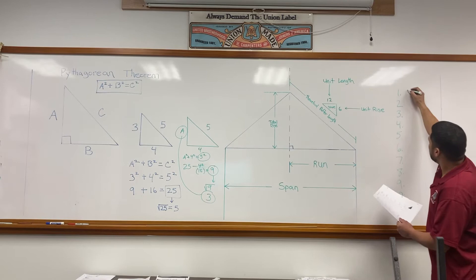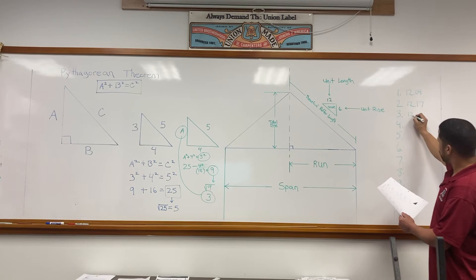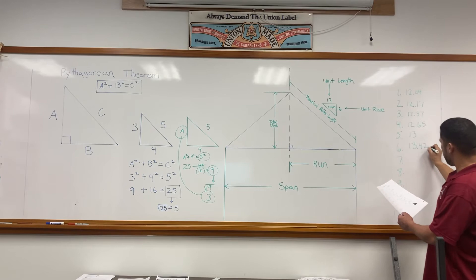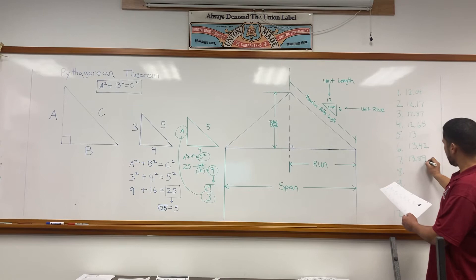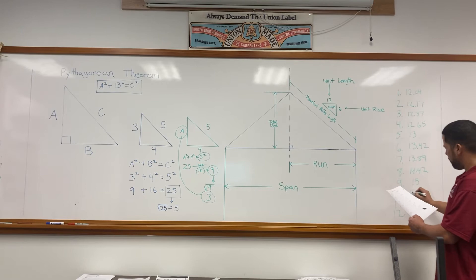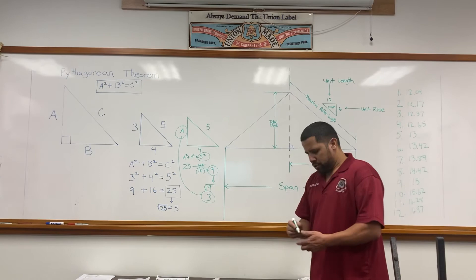On the first one, the hypotenuse was 12.04. Number 2, 12.17. Number 3, 12.137. Number 4, 12.65. Number 5, 13. Number 6, 13.42. Number 7, 13.89. Number 8, 14.42. Number 9, 15. Number 10, 15.62. Number 11, 16.28. And number 12, 16.97.